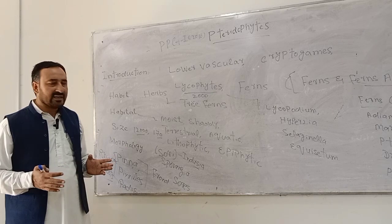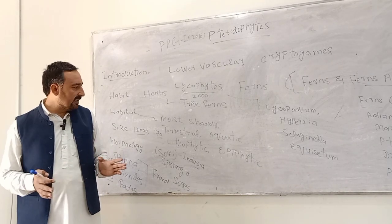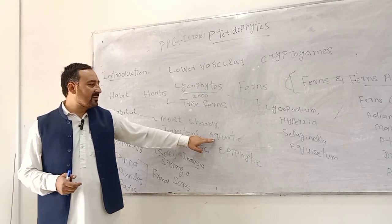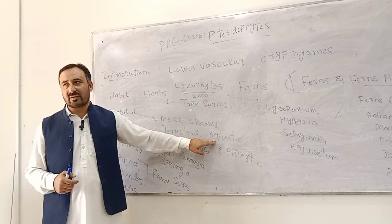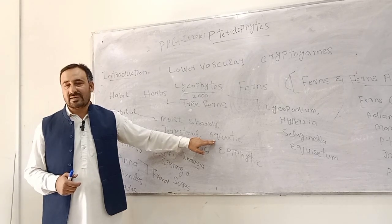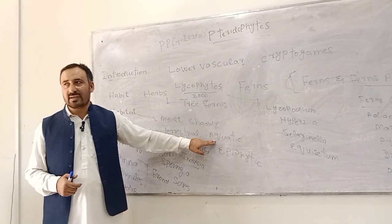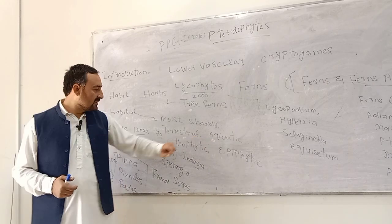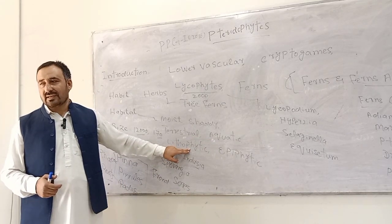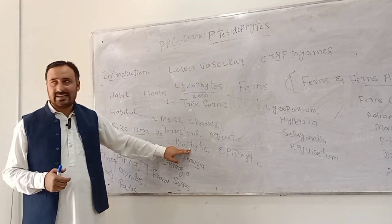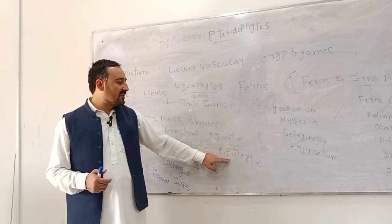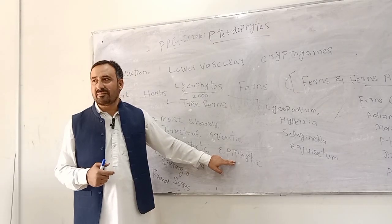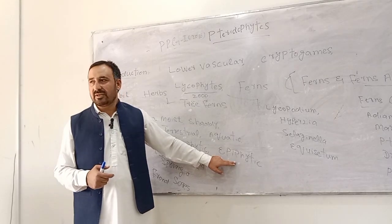Terrestrial means they will be found on the ground, on the soil. Aquatic means they will be found floating on the water — for example, Marsilea minuta, Marsilea quadrifolia, Azolla pinnata, and Salvinia. Lithophytic means they are found on rocks — for example, Cheilanthes, Elaphoglossum, and Asplenium. Epiphytic means they are found on other plants — for example, Pyrrosia and Lepisorus, which belong to family Polypodiaceae.